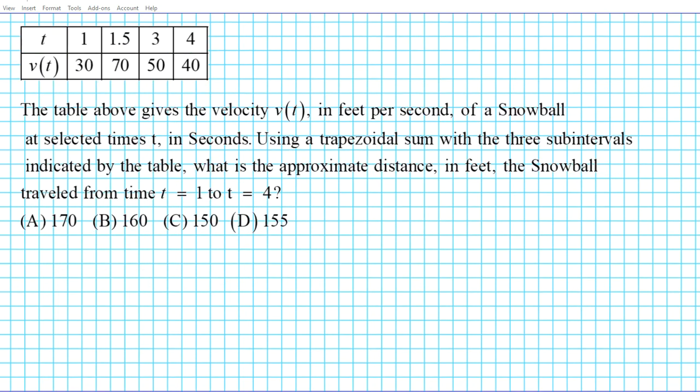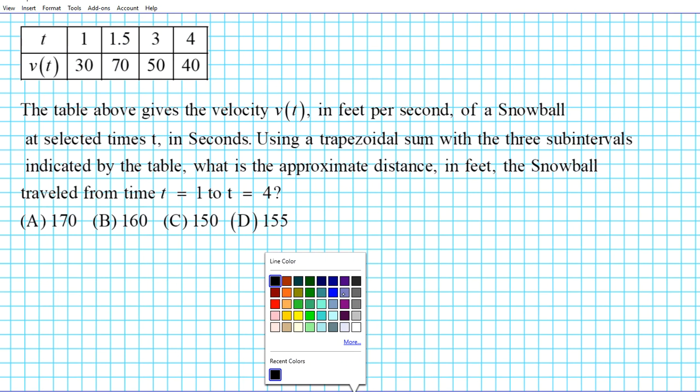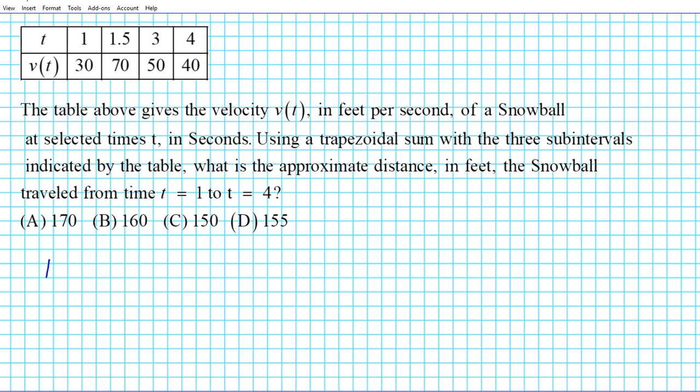So to get started, let's go ahead and write down the formula that will be guiding our problem solving process for this example. In this particular example, what are we asked to find? We're asked to approximate the distance from t equals one to t equals four.